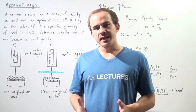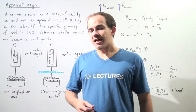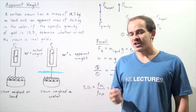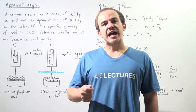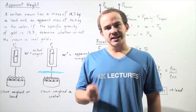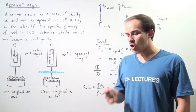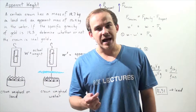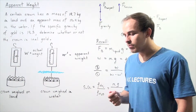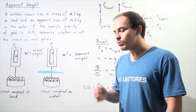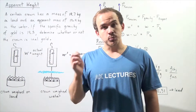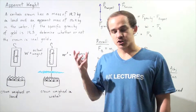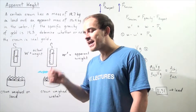Let's imagine that we're Archimedes, and our king asks us to determine whether or not a crown that was given to him as a gift is pure gold. So, how exactly would we go about solving this problem? How can we use Archimedes' principle to determine the solution to our problem?